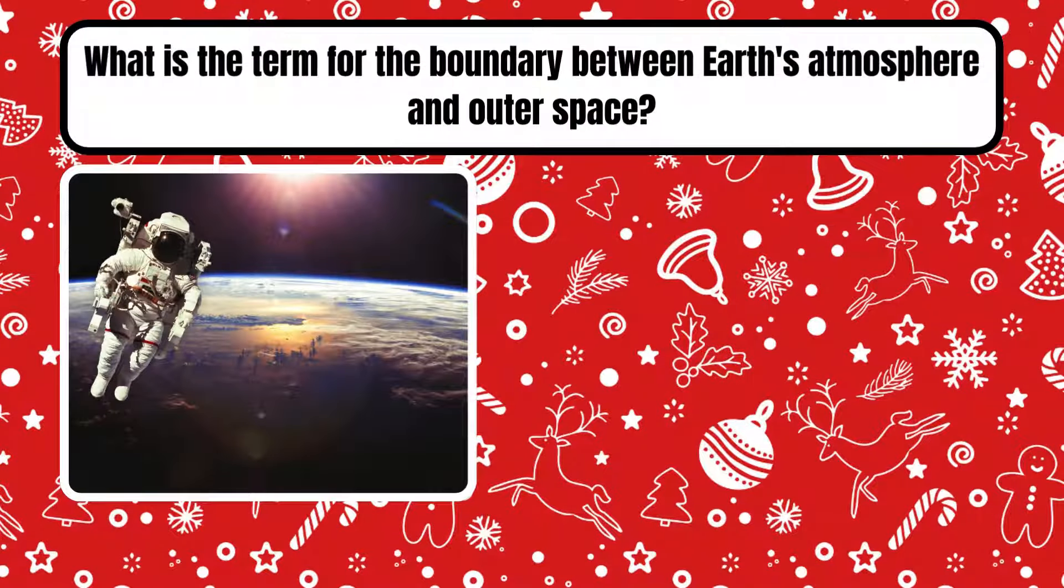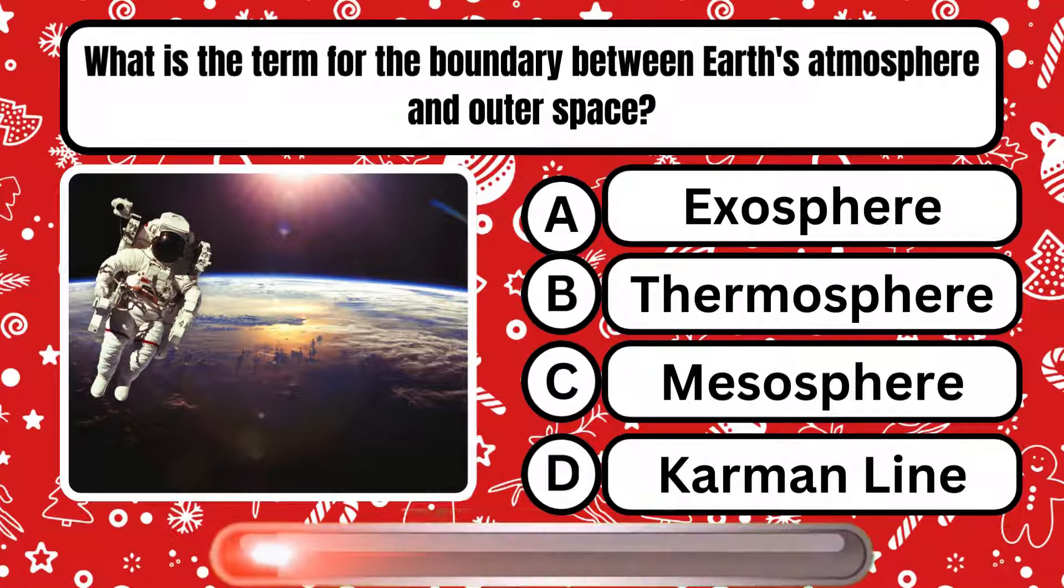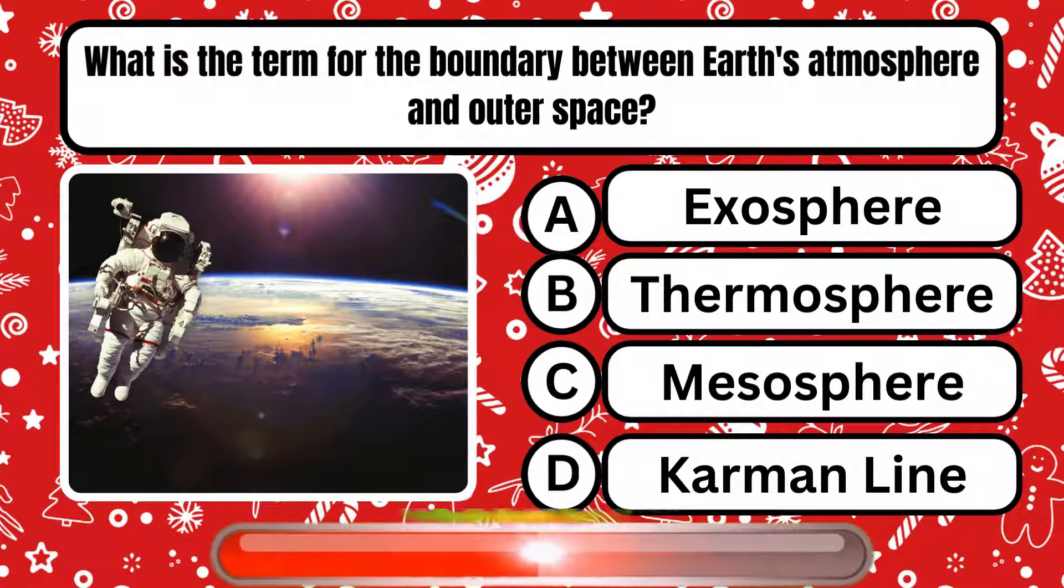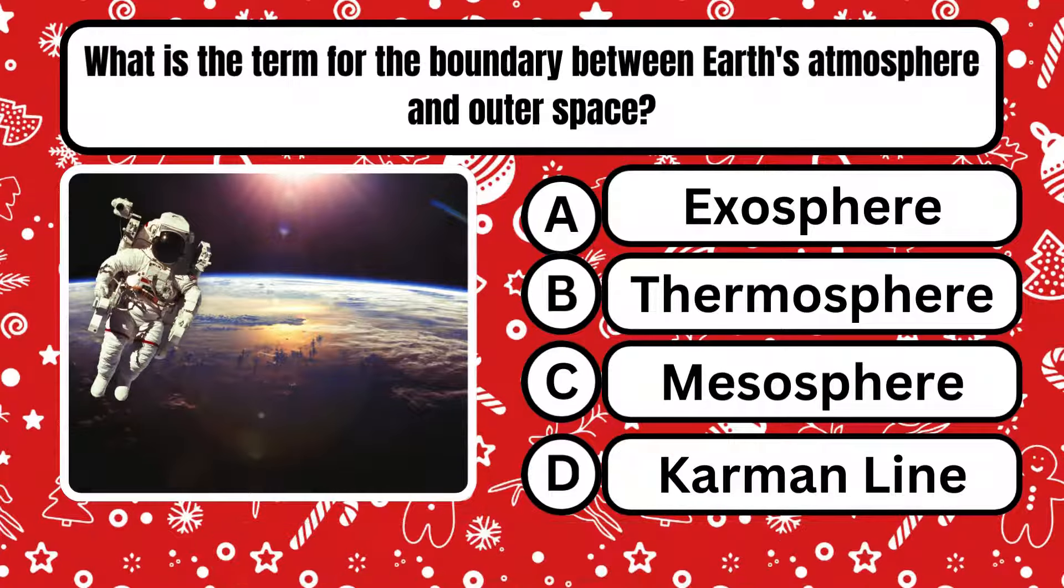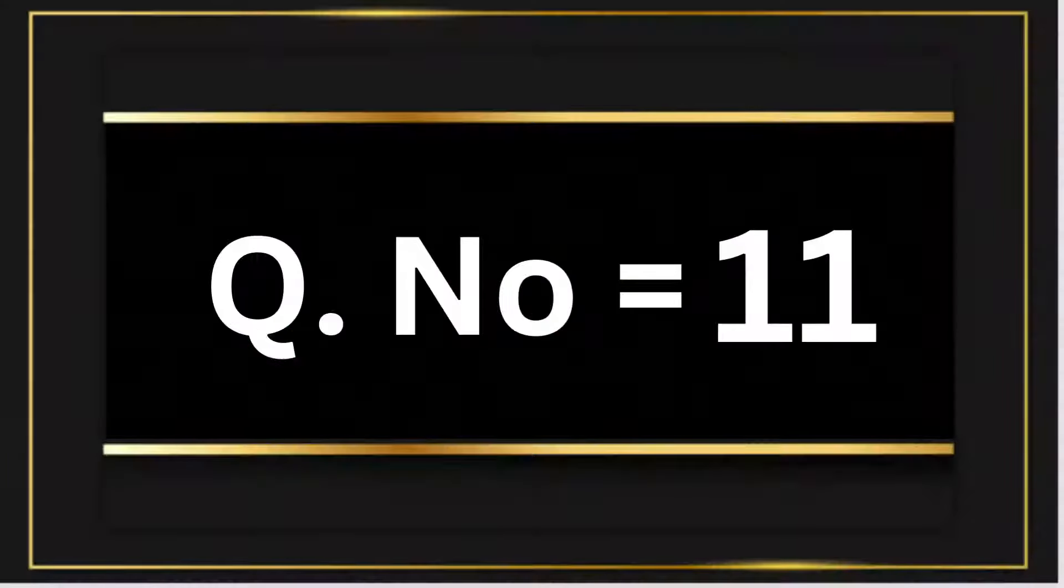Question number 10. What is the term for the boundary between Earth's atmosphere and outer space? Right answer is option D, Karman line.